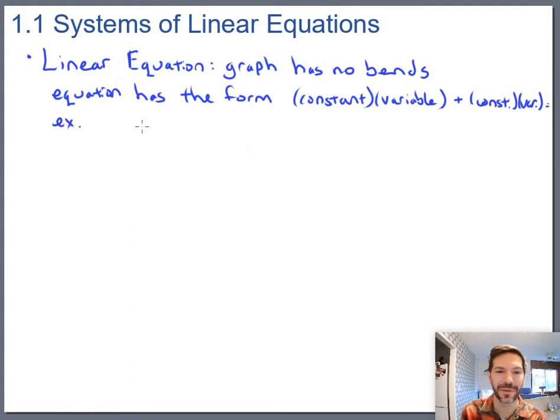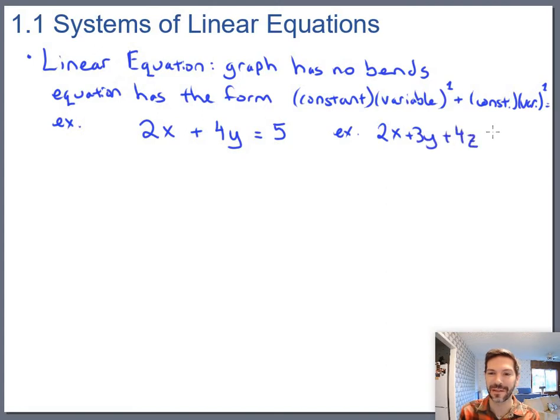An example that you might already be familiar with would be a constant times a variable to the first power. Maybe I should make that more explicit: variable to the first power, constant times a variable to the first power, plus another constant times a variable equals let's just say another constant. So that's a linear equation in two dimensions - there's an x and a y. We could have a three-dimensional version of this which would be something like 2x plus 3y plus 4z equals 12, and that equation would look like some sort of plane.